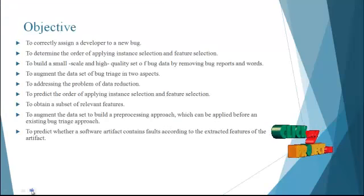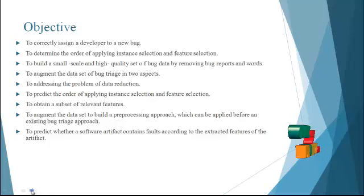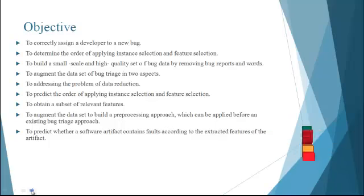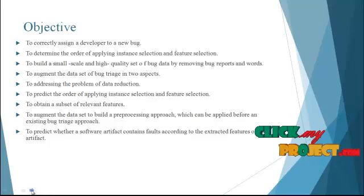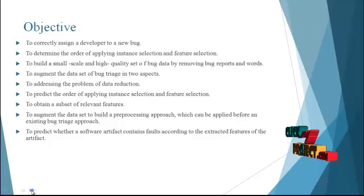Now let me discuss about the objective of the process. The main objective is to correctly assign a developer to a new bug. It is to determine the impact of applying instance selection and feature selection. The main objective is to build a small-scale and high-quality set of bug data by removing bug reports and words, and to augment the data set of bug triage into aspects.